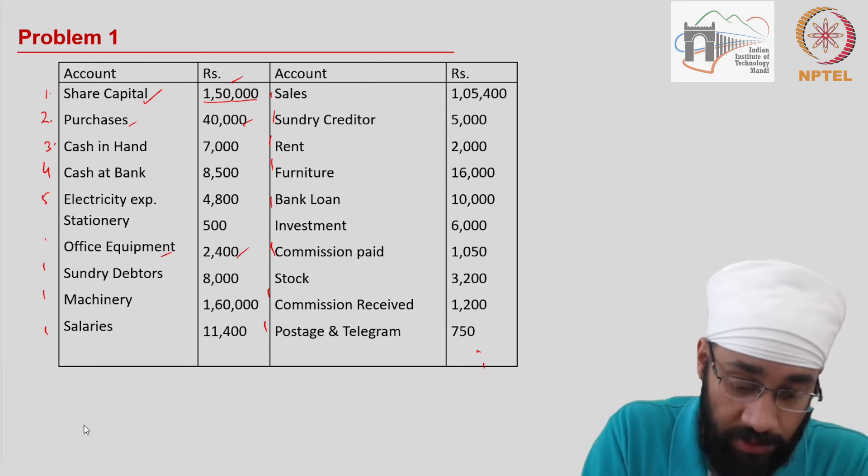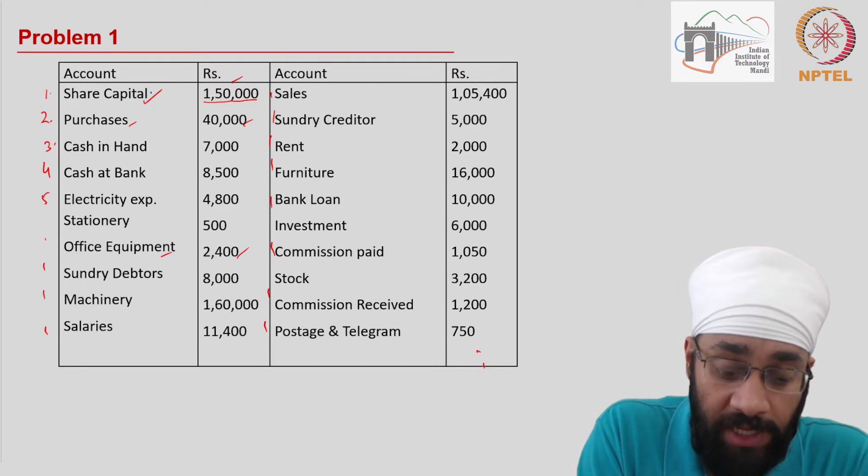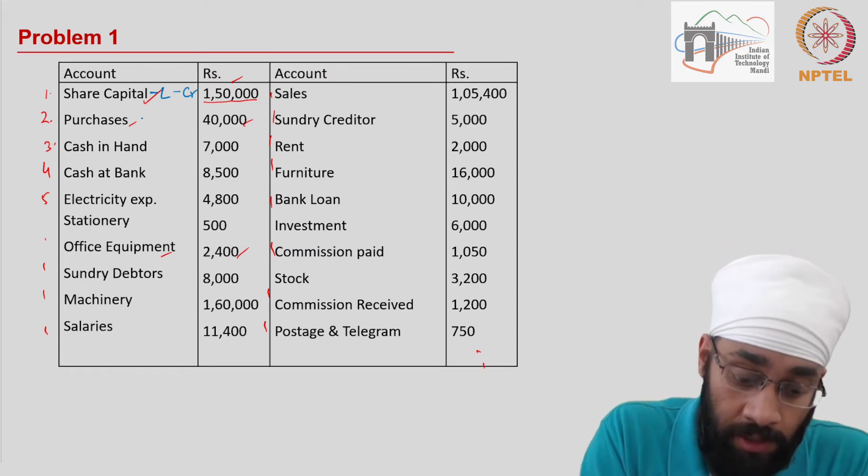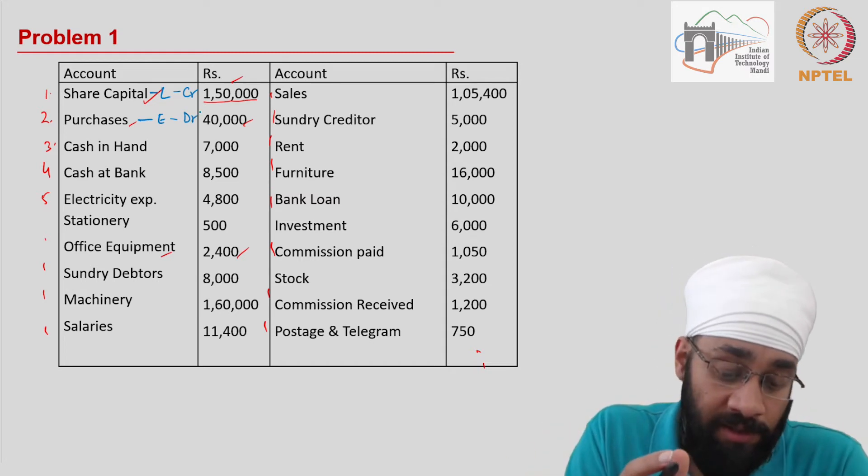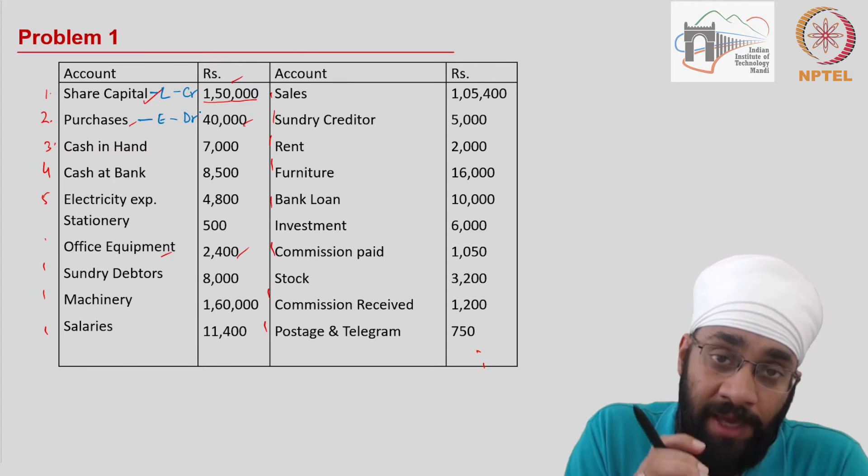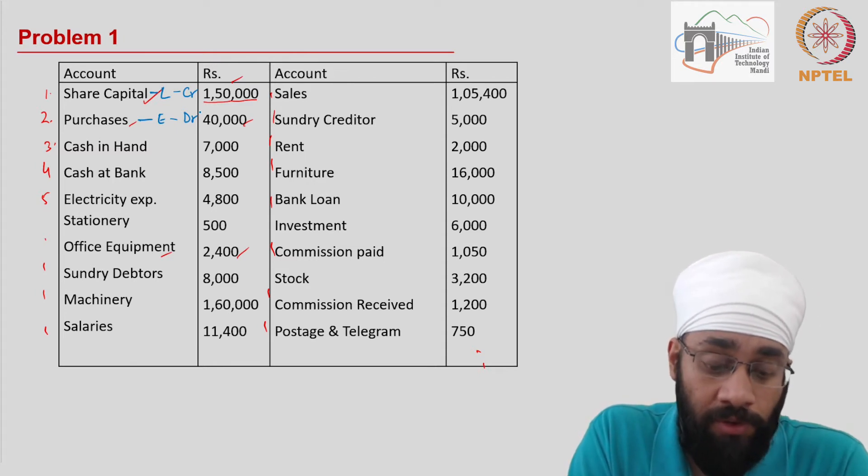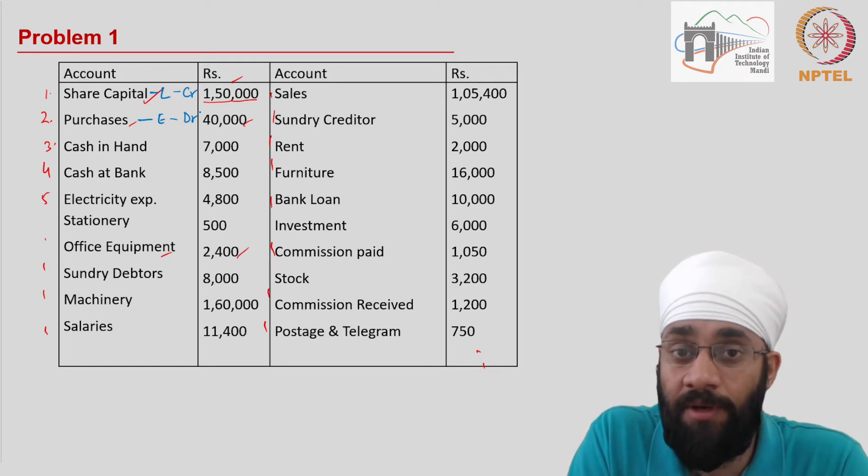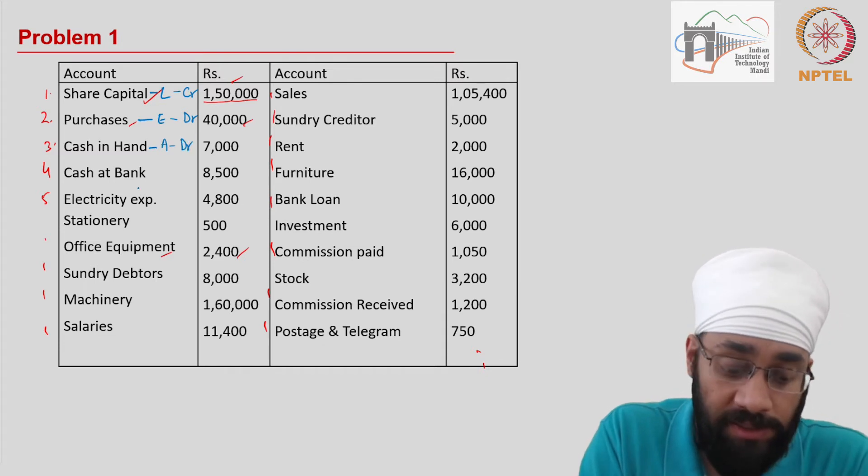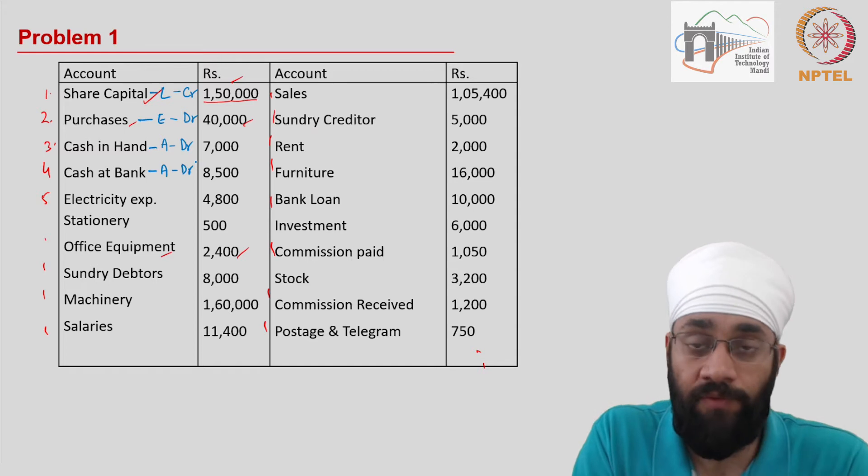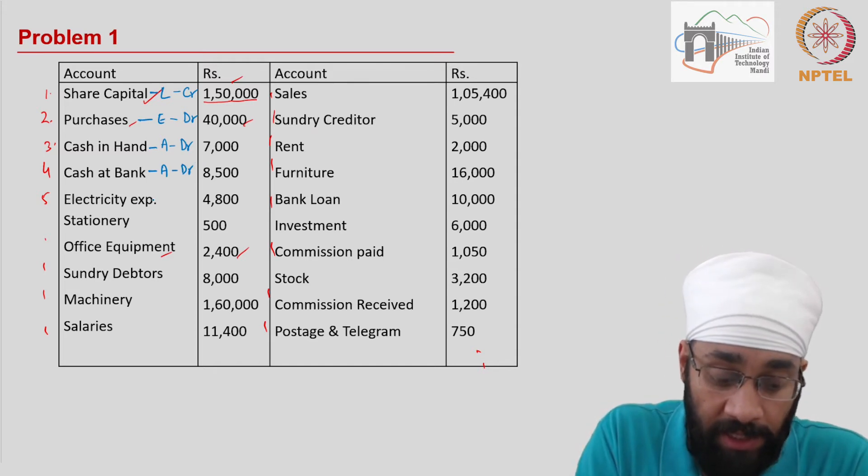Share capital is a liability and all liabilities have a credit balance. Purchase is an expense, all expenses have a debit balance. Identifying an item to be income, expense, asset, or liability should be on your tips now. Cash in hand is an asset, hence debit balance. Cash in bank is also an asset, therefore also a debit balance.